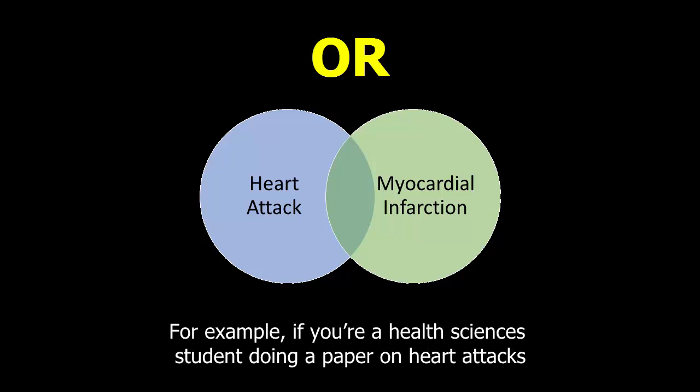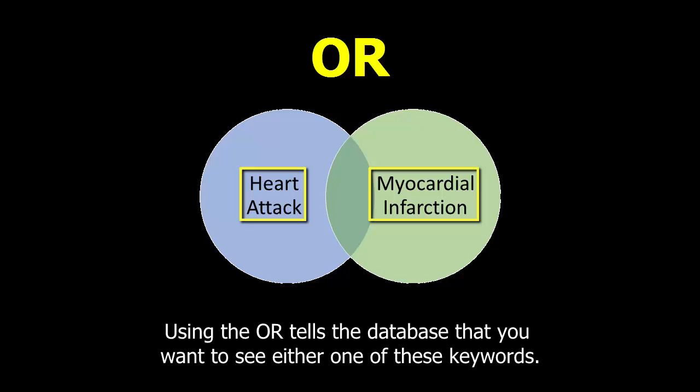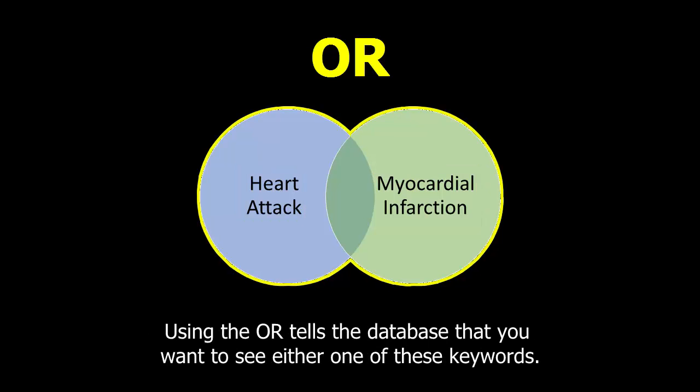For example, if you are a health sciences student doing a paper on heart attacks, you could call them heart attacks or use the medical term myocardial infarction. Using OR tells the database that you want to see either one of these keywords.